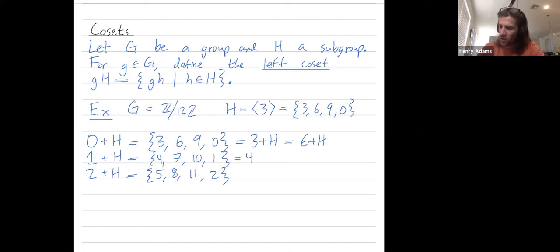1 plus H is also the coset 4 plus H, which is also 7 plus H. And 2 plus H is also the coset 5 plus H, which is also 8 plus H.